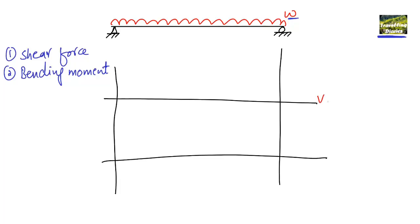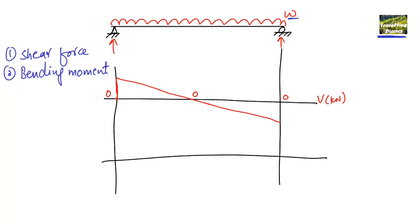If I draw the shear force diagram — V in kilonewtons — for a simply supported beam with a uniformly distributed load, half the load is taken by each support. The shear force is maximum at the supports, decreases to zero at midspan, and then goes negative on the other side.